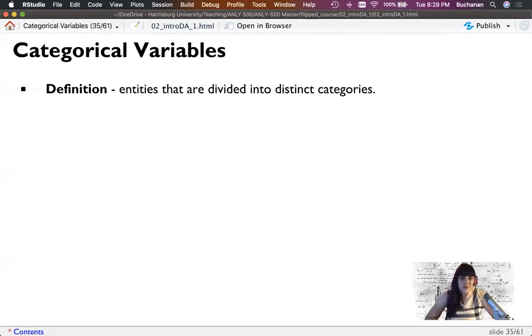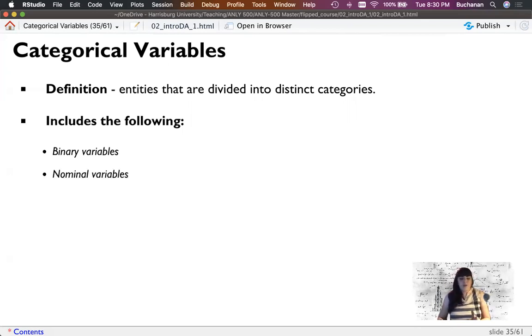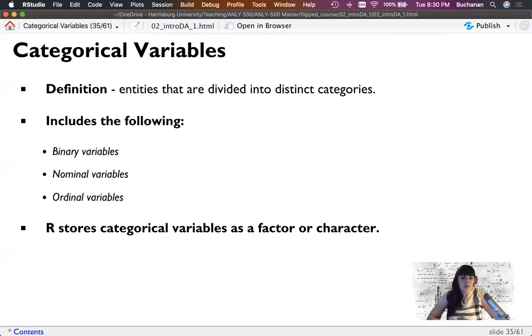So let's look at categorical variables first. These are things that we can divide into distinct categories, usually of labels. So in my study of the texting group versus the not texting group, that's a distinct category. So that variable is technically binary, meaning it has two options—they're either in the experimental group or they're in the control group. But there's also nominal variables and ordinal variables. So let's do all three.